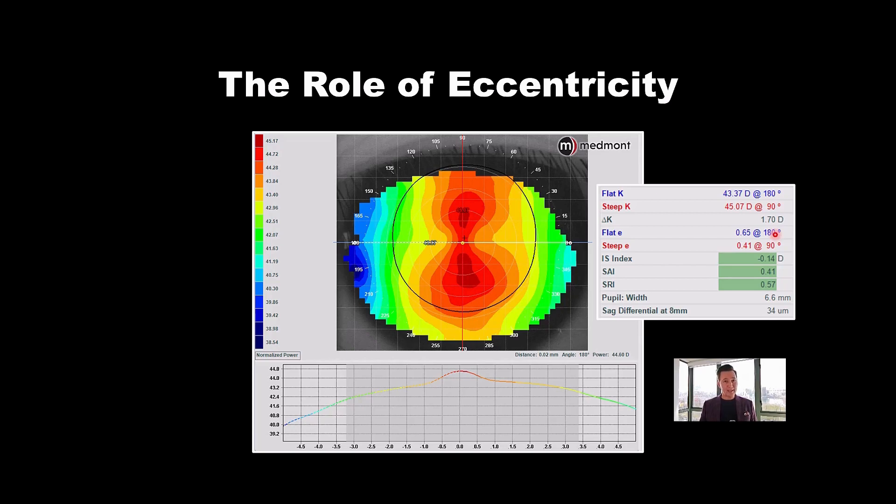If you're shooting for a minus eight myope, and you've got median cornea and median eccentricity, then forget about it. It's just not going to be possible to move the cornea enough, or at least your chances are fairly low.